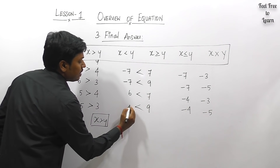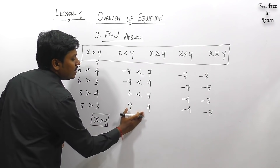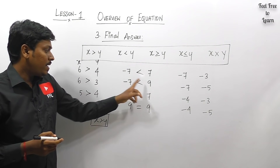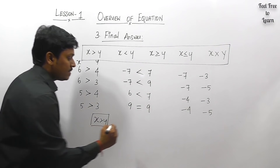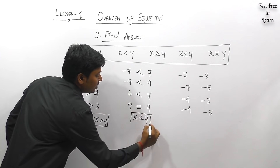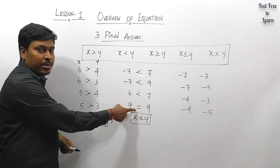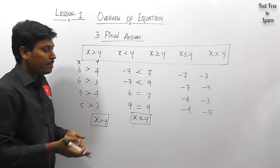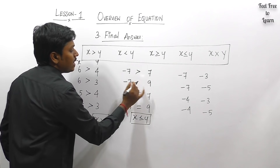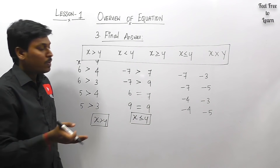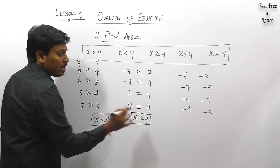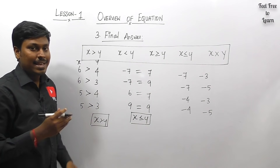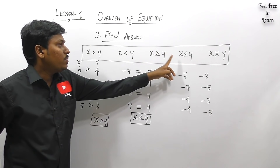If you get three less-than results and one equal result, the final answer is x ≤ y. If there are two less-than and one equal, the answer is still x ≤ y. If you get two greater-than results and one or more equal results, the answer is x ≥ y. If there is one greater-than and multiple equal results, the answer is x ≥ y. If all comparisons are equal, the answer is x = y.